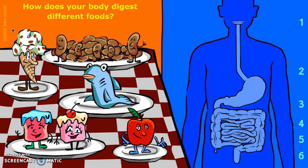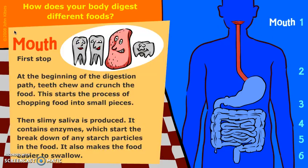The gastrointestinal tract is a series of hollow organs connecting from the mouth at the start of the digestive process all the way through to the rectum and the anus at the end. We're going to take a look in detail at six of the major points along this pathway today, starting with the mouth.